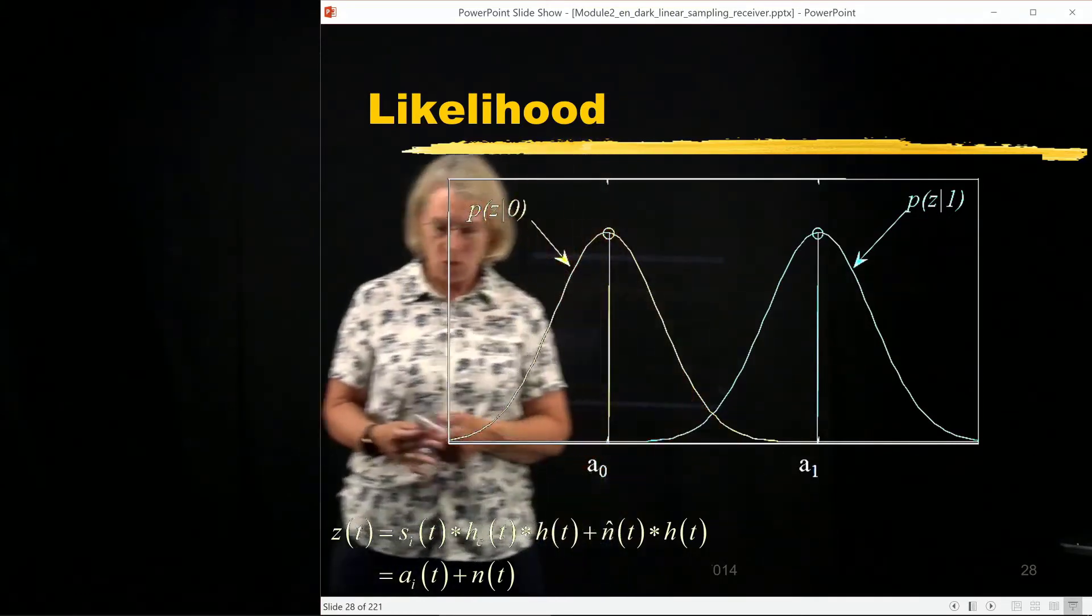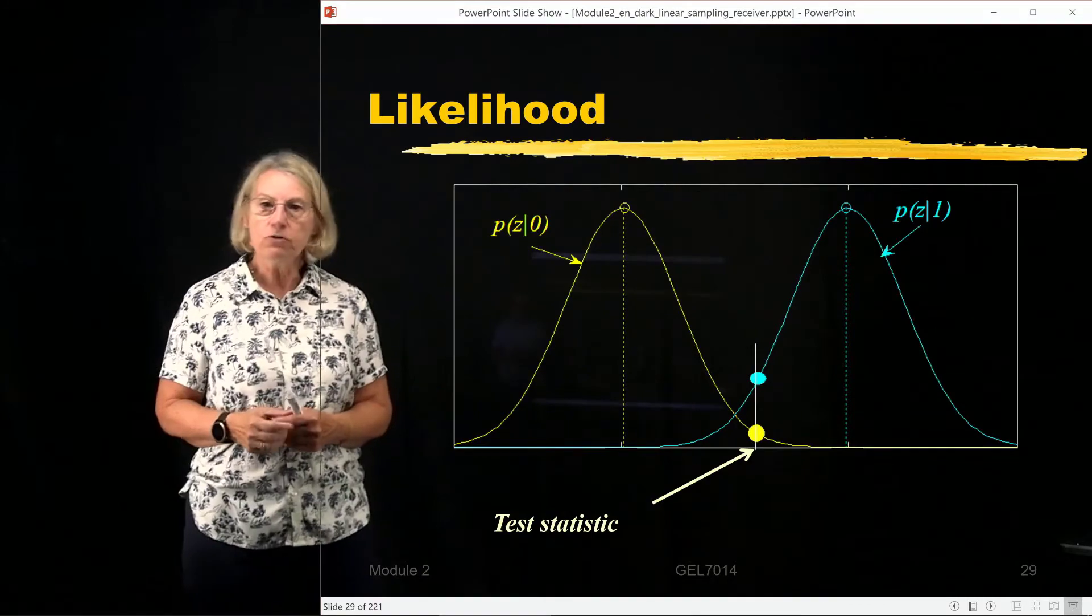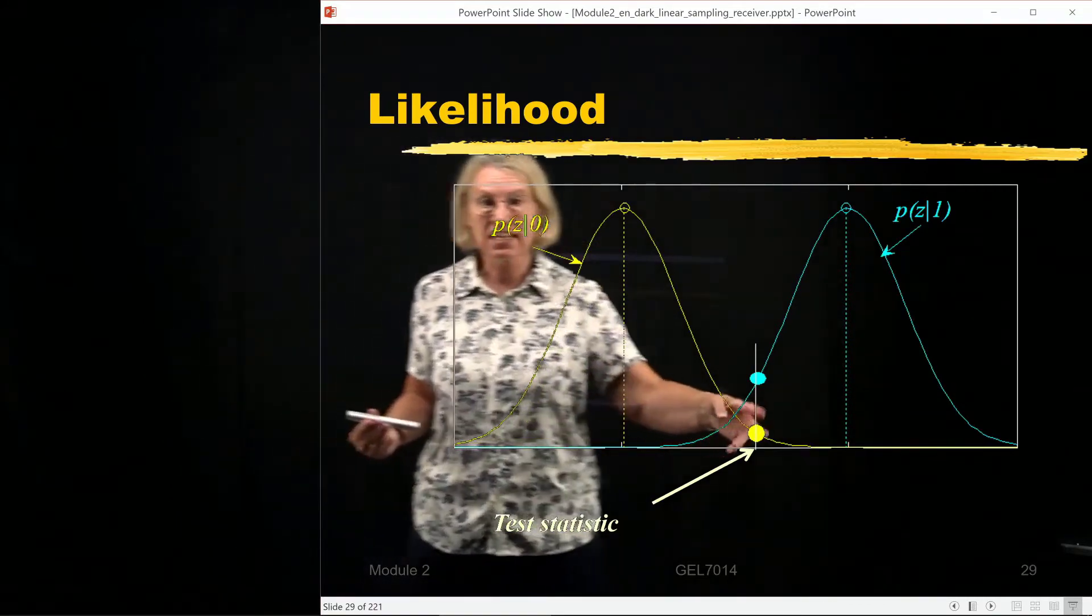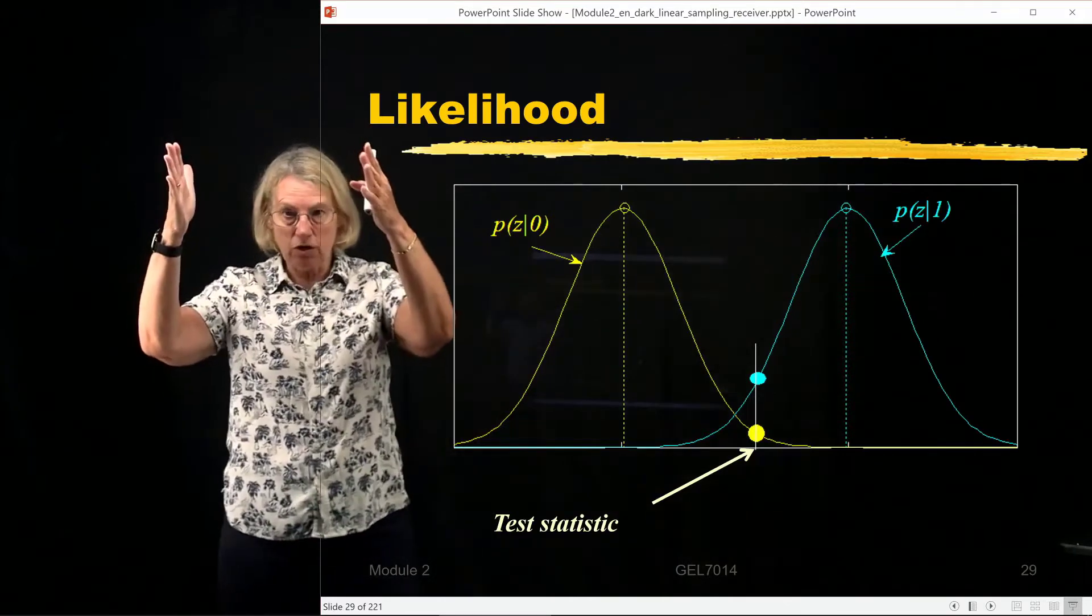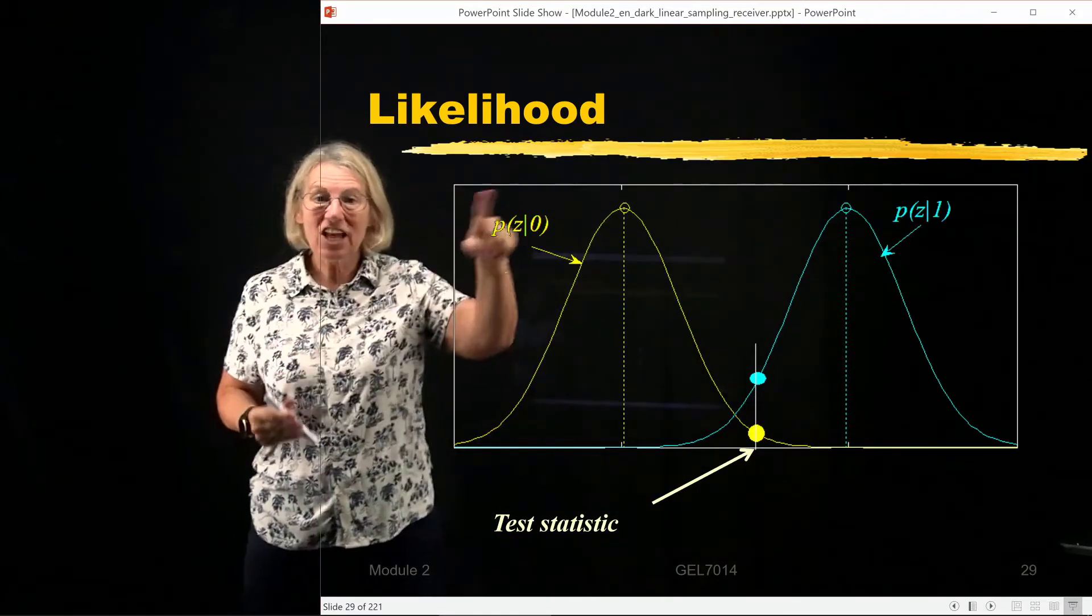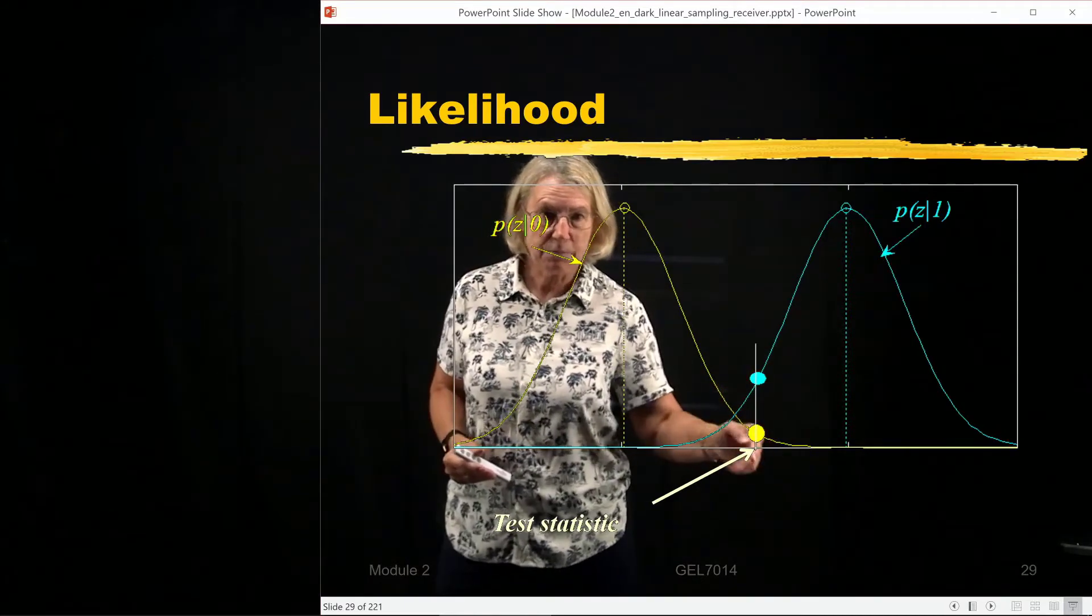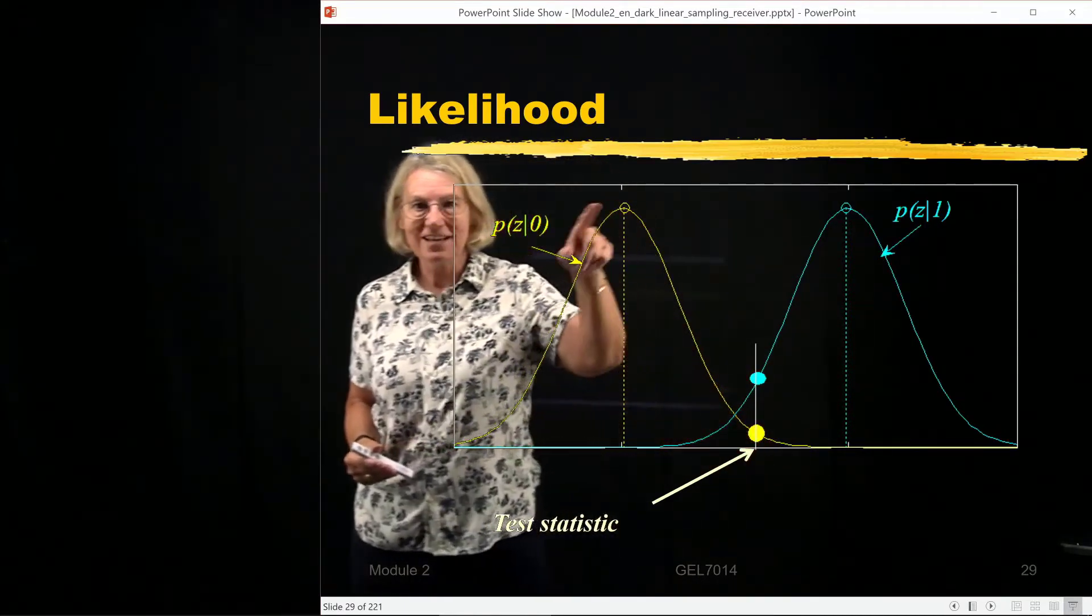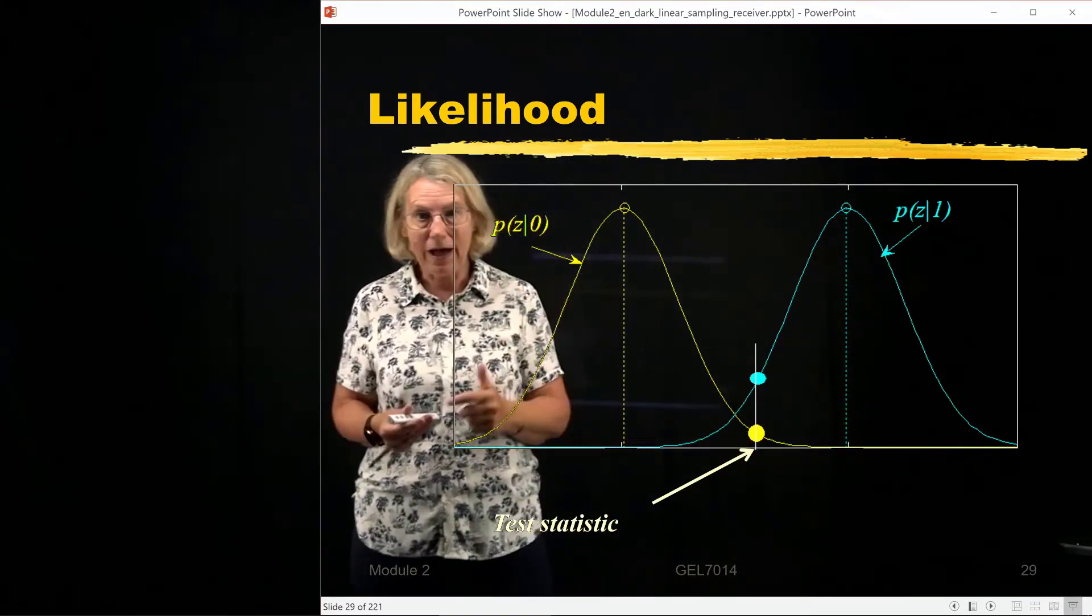So what we're doing with the likelihood function is we're saying we're going to choose 1 if it is greater than the midpoint between these two. Now suppose I get a certain value. This is my test statistic. If I were just going to say maximum likelihood, I would actually say the likelihood value for this test statistic, if I put that number into this condition on 0, I would get a certain value. I would do 1 over square root of 2π, sigma, whatever it is, and I would get this number.